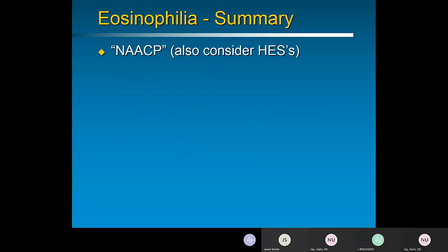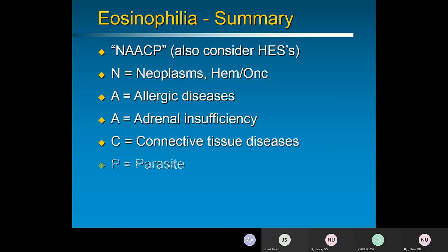In summary: for eosinophilia, consider a broad differential diagnosis using frameworks like NAACP. Remember that if you exclude neoplastic, allergic, connective tissue diseases, and parasites, this could be part of the hypereosinophilic syndromes — try to subtype them. Consider adrenal insufficiency for mild eosinophilia.